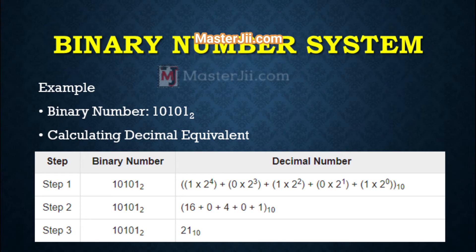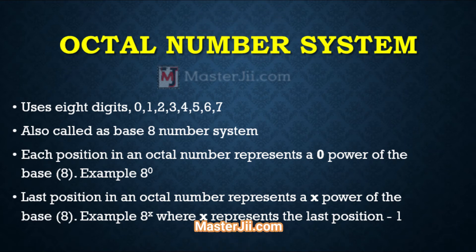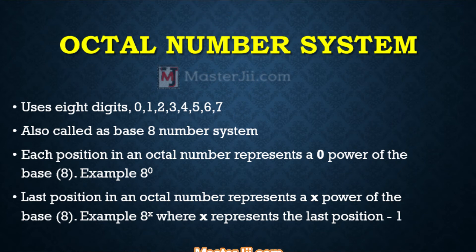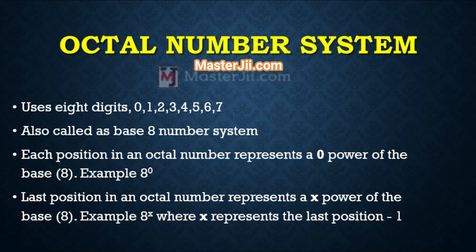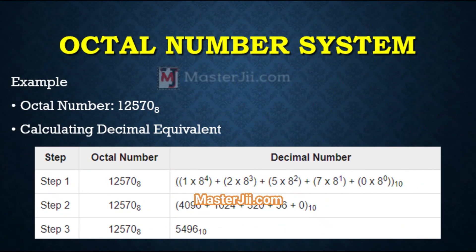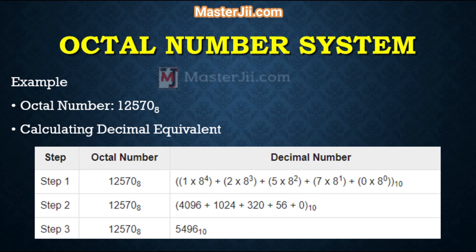The third is the octal number system. Its characteristics include: it uses 8 digits — 0, 1, 2, 3, 4, 5, 6, 7 — also called the base-8 number system. Each position in an octal number represents a power of the base 8 — for example, 8 raised to the power 0 for the last position, and 8 raised to the power x, where x represents the last position minus 1. For example, given the octal number 12570 with base 8, when we calculate the decimal equivalent value, the answer is 5496 with base 10, by solving all the steps shown on your screen.